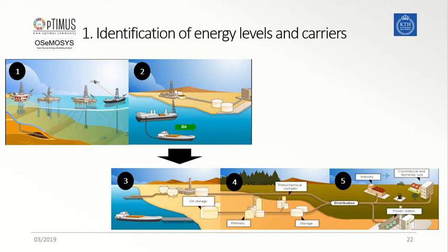Here, the crude oil is stored as in picture 3, and then transferred to the refineries in picture 4, where the primary commodity gets converted into a secondary commodity, which in this case is the refined oil. Finally, as illustrated in picture 5, the refined oil can now be distributed to the final demand side, represented by different buildings, industries, etc.